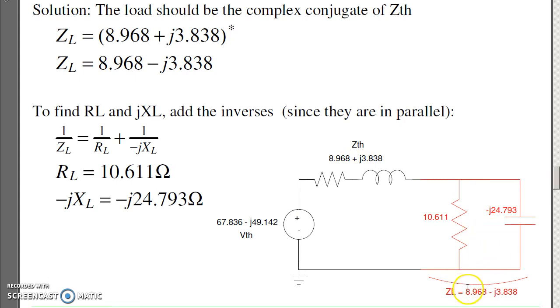To find these two, I want the impedance, the series impedance to be 8.96 minus j 3.8. In parallel, that's going to be the total impedance, 1 over Z load, which is the 8.9 plus j 3.8, is equal to the resistance plus capacitance. Taking the real part, the real part is 10.6, the complex part is minus 24.